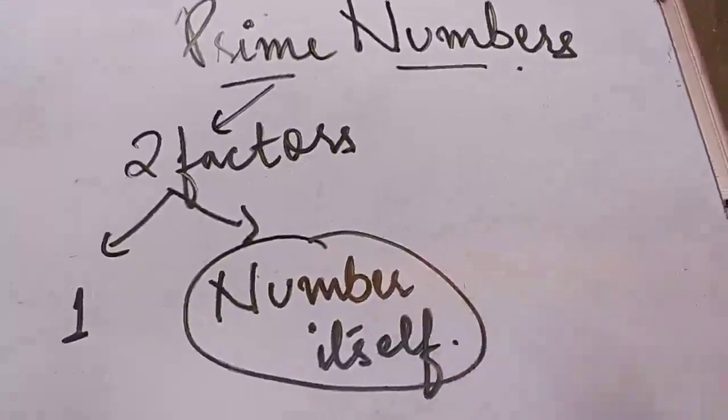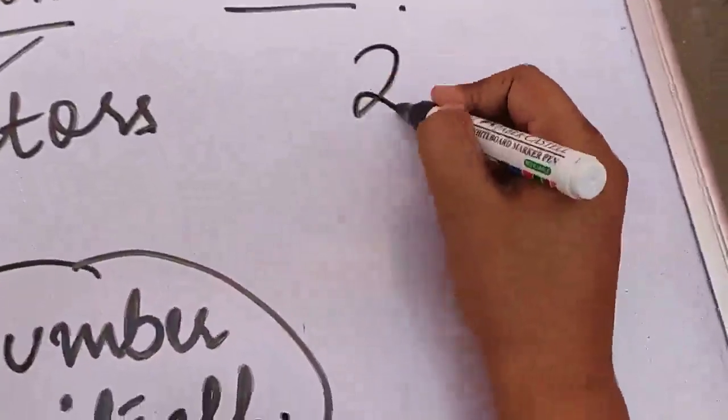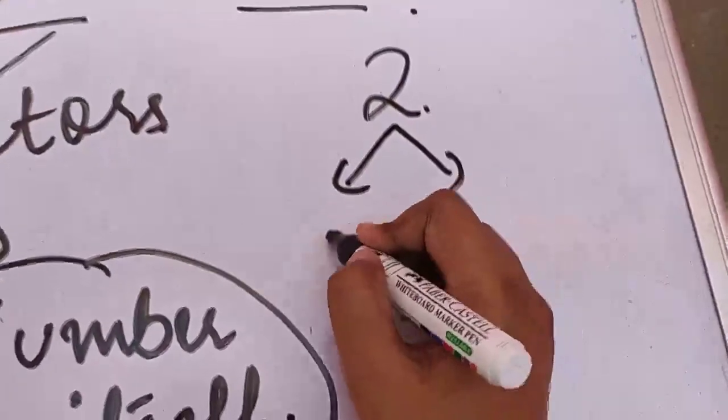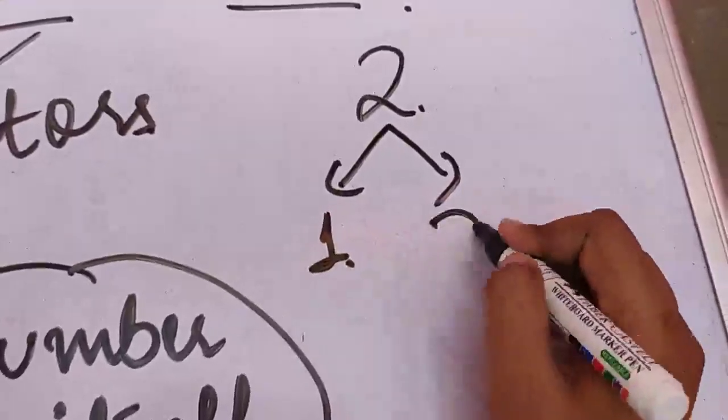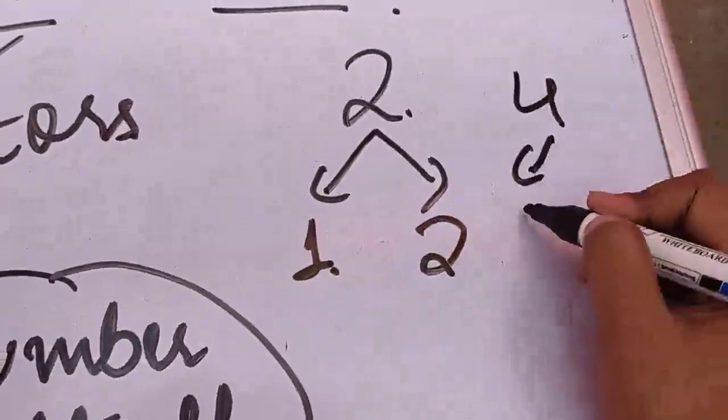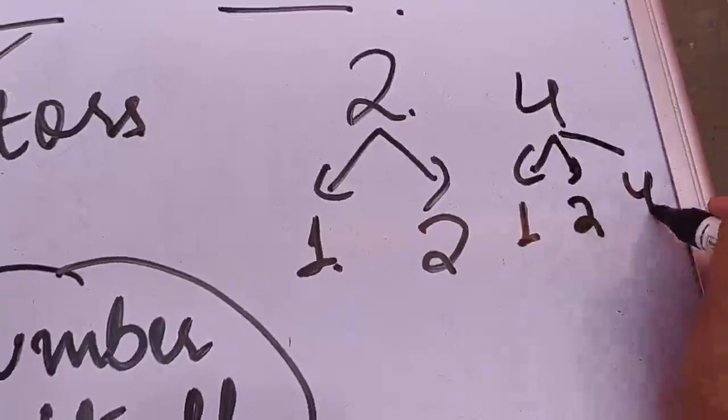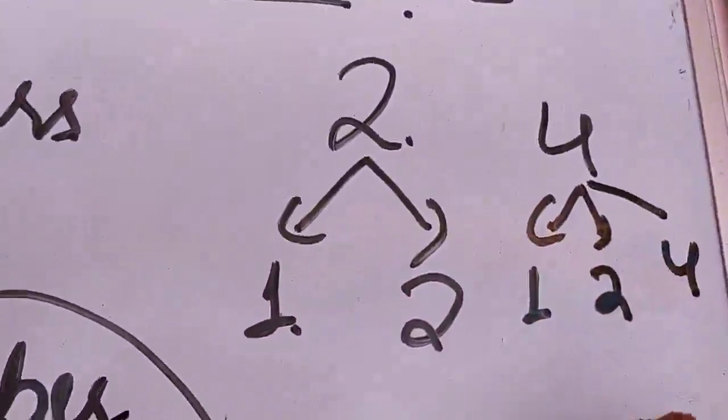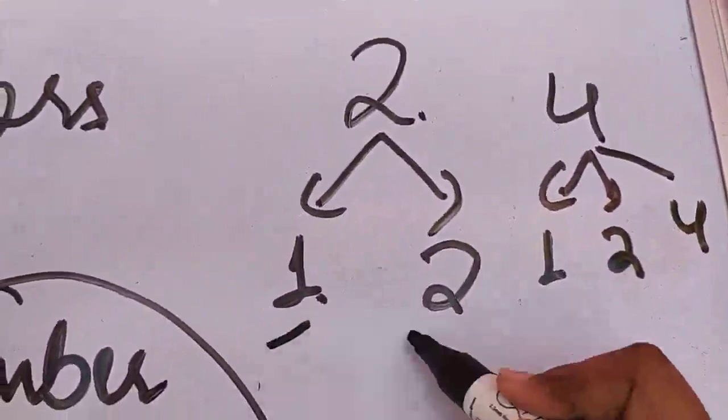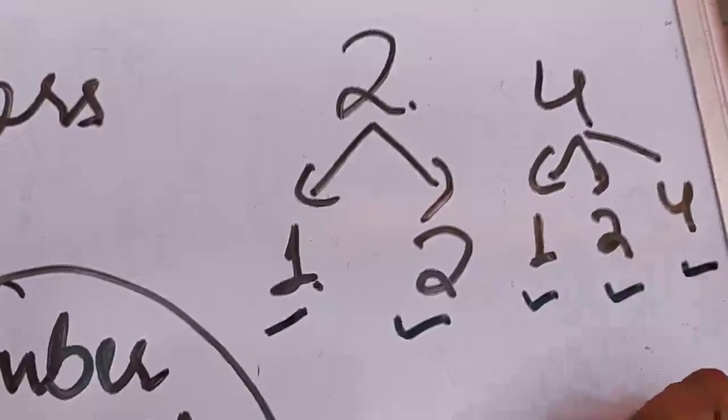Let's consider an example. I will find the factors of 2. For 2, it comes in the 1 times table, and it comes in the 2 times table. If I talk about 4, then 4 comes in the 1 times table, 4 comes in the 2 times table, and 4 comes in the 4 times table. So how many factors of 2 did we get? 1, 2. Two factors. And if I talk about 4, then 1, 2, 3. Three factors.